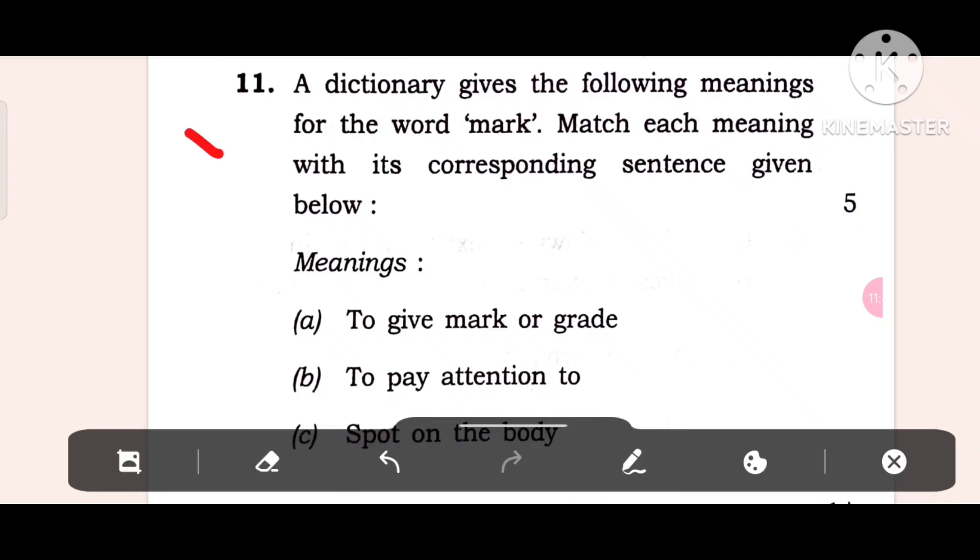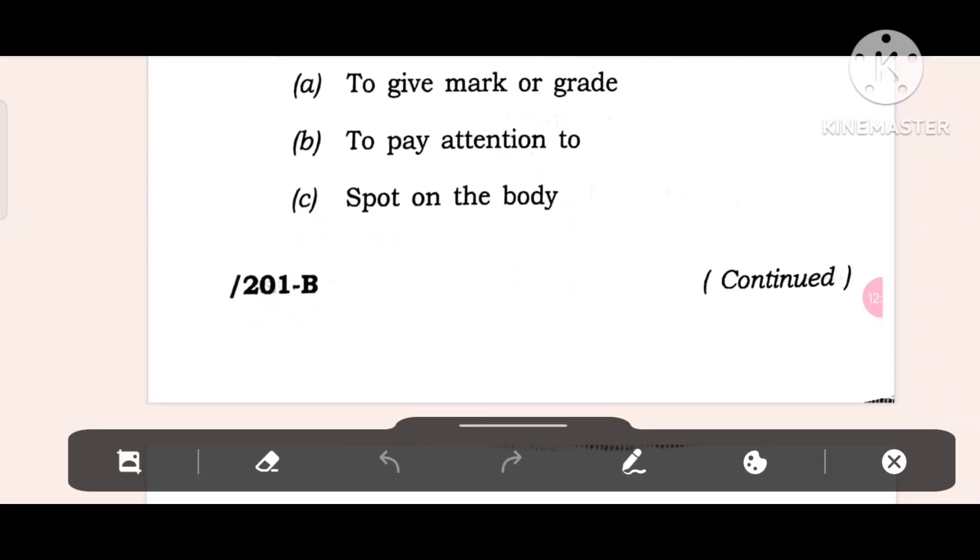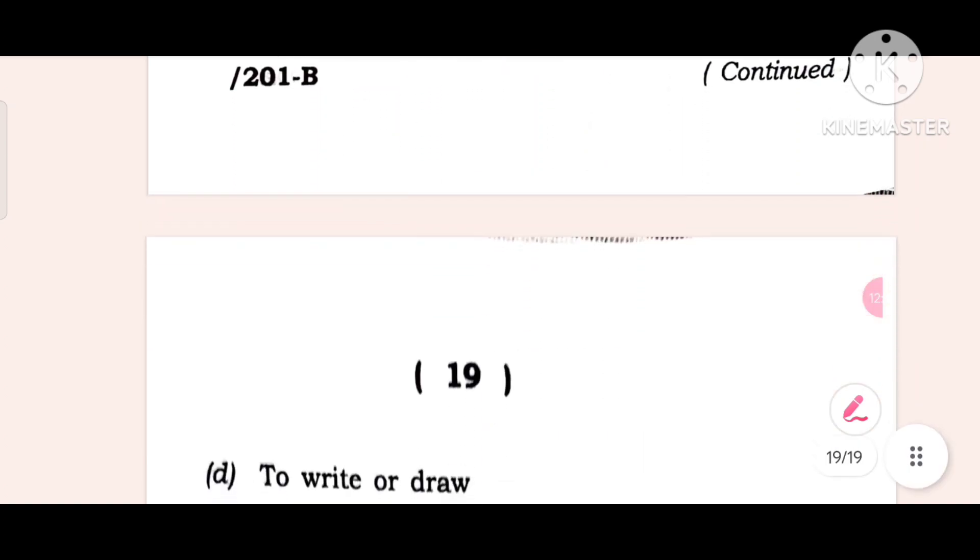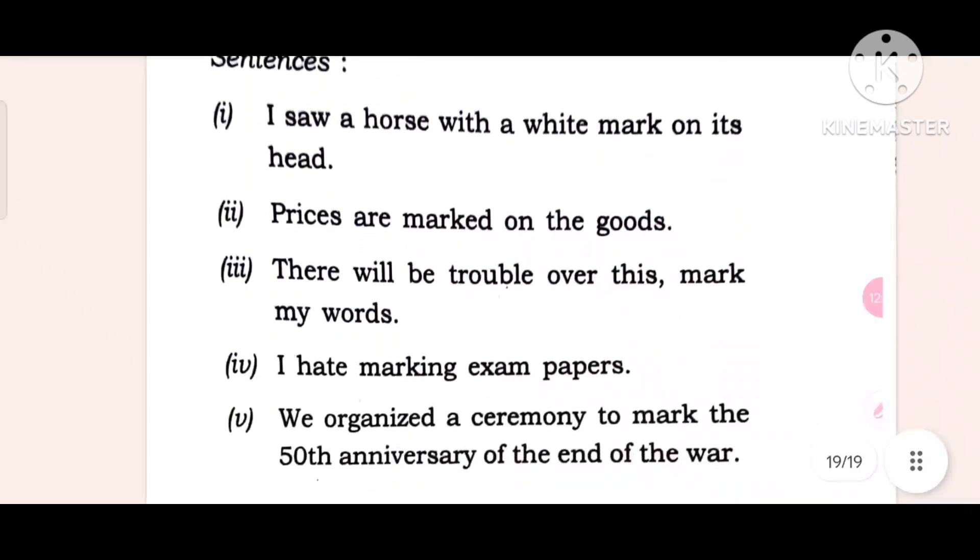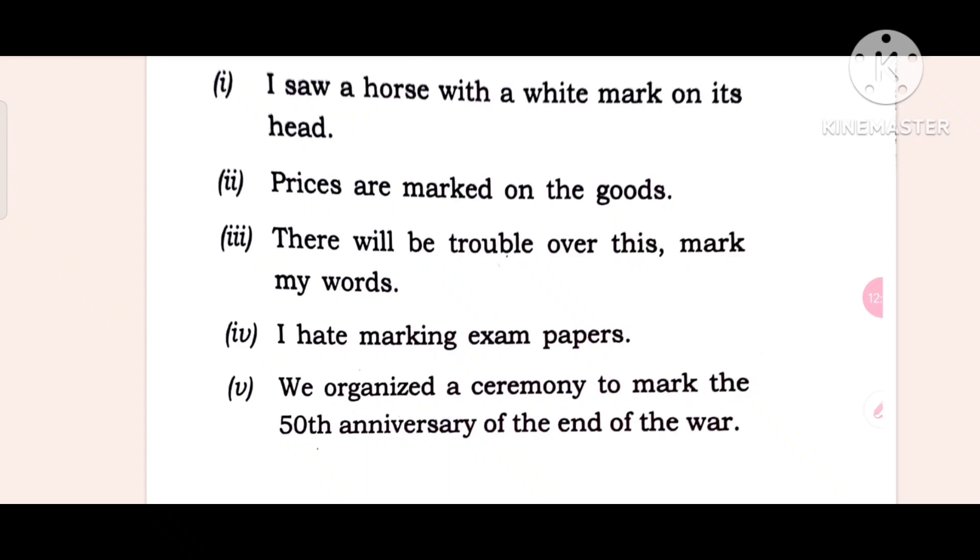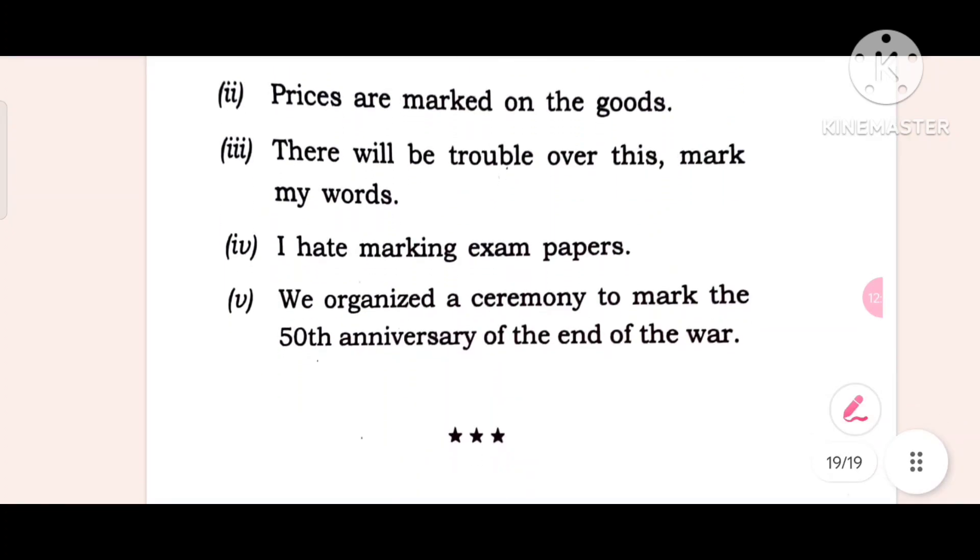Dictionary skill, five marks. A dictionary gives the following meanings for the word 'mark'. Match each meaning with its corresponding sentence given below. Meanings include: to give mark or grade, to pay attention, spot on the body, to write or draw, to celebrate. Sentences like 'I saw a horse with white mark on its head,' 'Prices are marked on the goods,' 'There will be trouble over this, mark my words,' 'I had been marking exam papers,' 'We organize this ceremony to mark the 50th anniversary.'